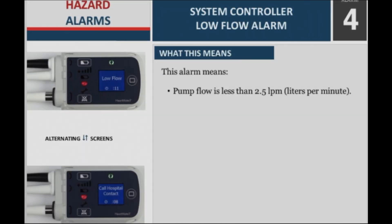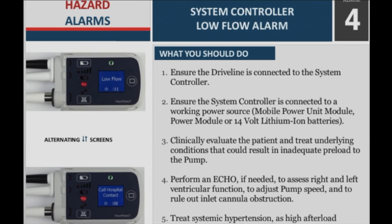What this means: Pump flow is less than 2.5 liters per minute. What you should do: Step 1 — Ensure the driveline is connected to the system controller. Step 2 — Ensure the system controller is connected to a working power source: mobile power unit module, power module, or 14V lithium ion batteries. Step 3 — Clinically evaluate the patient and treat underlying conditions that could result in inadequate preload to the pump.